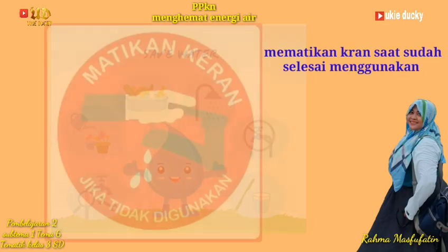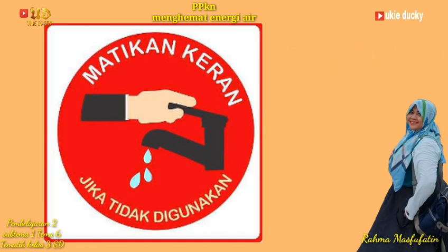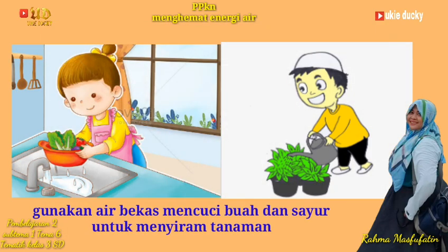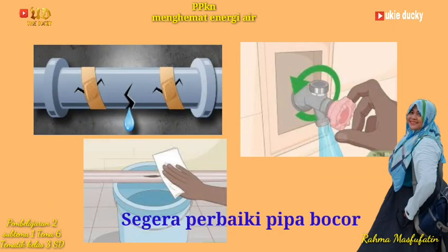Yang pertama, mematikan kran saat sudah selesai menggunakan dan mematikan pula kran saat menggosok gigi. Selanjutnya, gunakan air bekas mencuci buah dan sayur untuk menyiram tanaman. Dan langkah yang ketiga untuk menghemat air yaitu menggunakan sabun pencuci piring atau deterjen secukupnya, tujuannya adalah ketika kalian membilasnya, kalian tidak akan membutuhkan air secara berlebihan. Selanjutnya, tahapan yang keempat untuk menghemat air adalah segera memperbaiki pipa yang bocor atau kran yang rusak sehingga membuat air tidak menetes.